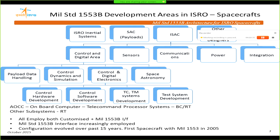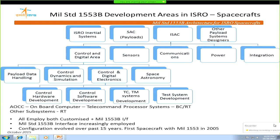To give a brief of where we stand: we have the ISRO satellite center where 1553 is involved in many systems like communication and sensors. We are responsible for control software development, hardware, housekeeping systems development, and test systems. The 1553 bus is present across all these systems — power, integration — it's a very simple bus that has been working for 10 to 15 years.